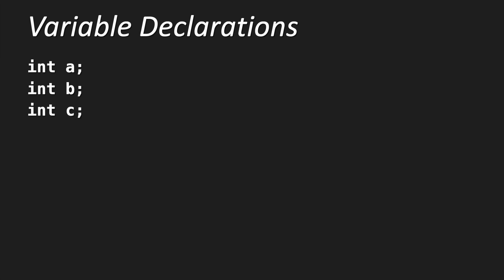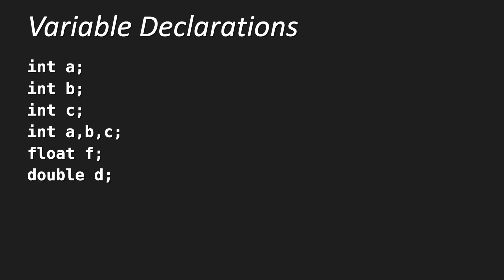Here are some valid declarations in Java. For instance, you can have an int a, you can have an int b, you can have an int c. You can also write them one after another: int a, b, c. You can have a float f, you can have a double d, you can have a char ch, and so on. Notice, this is only the declaration, so we only have the data type — for instance int — and a unique name. In this case the name is only a character, so int a semicolon.